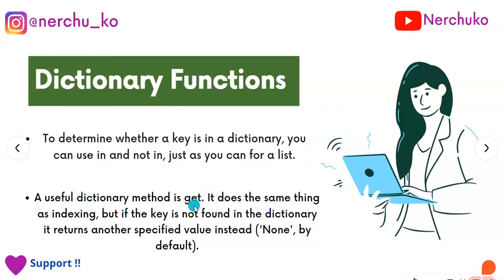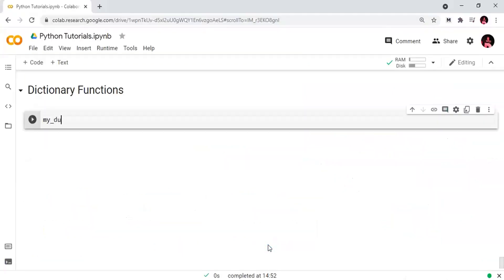A useful dictionary method is get. It does the same thing as indexing, but if the key is not found in the dictionary, it returns another specified value instead of raising an error — None by default. You can also specify a custom default value to return.